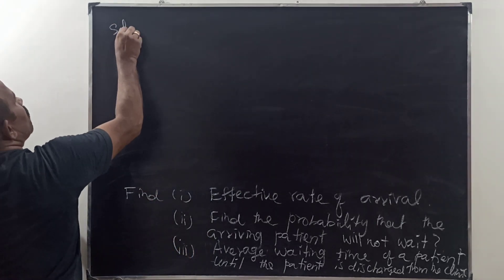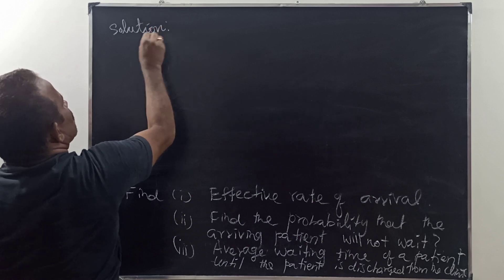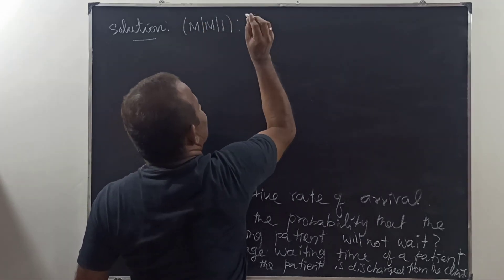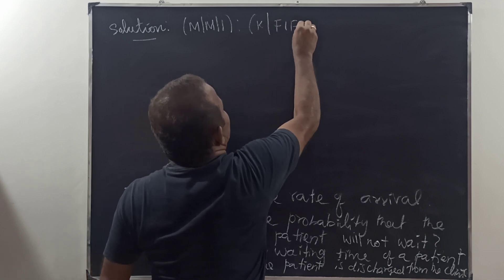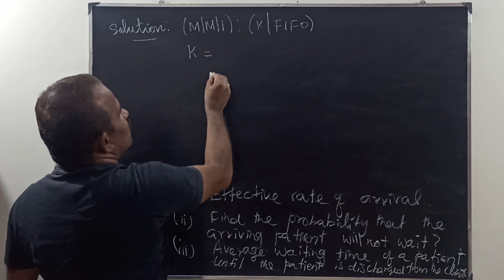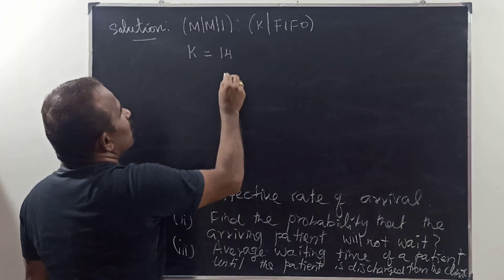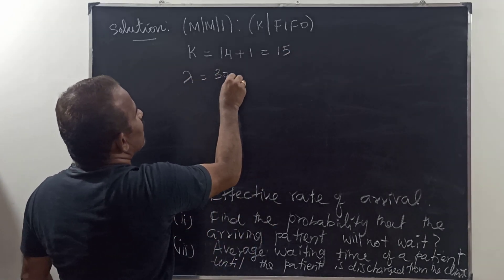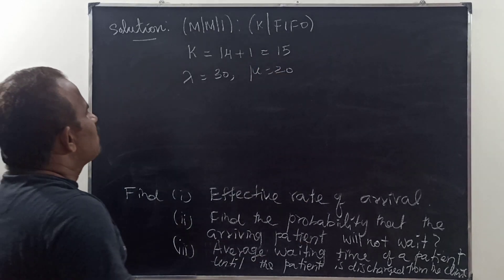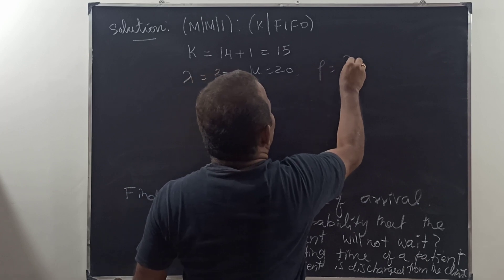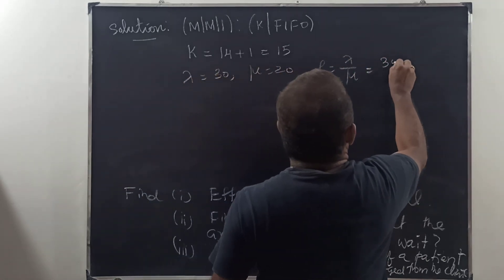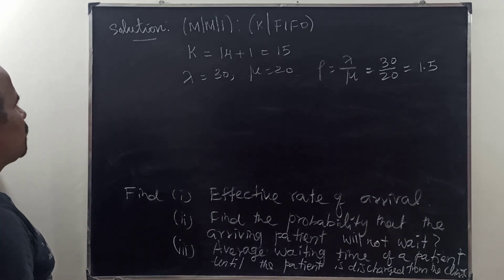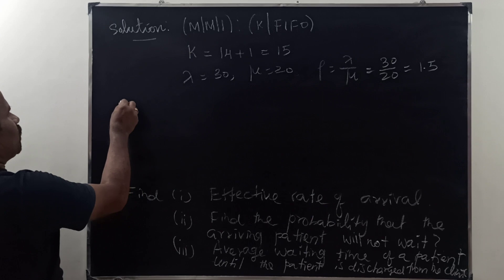Solution. This is model M/M/1 with finite arrival K, first in first out. K is equal to 15 (14 persons waiting plus 1 in service). Lambda is equal to 30, mu is equal to 20. Therefore rho is equal to lambda by mu = 30/20 = 1.5. K is also given, so we need to find the effective rate of arrival lambda-dash.